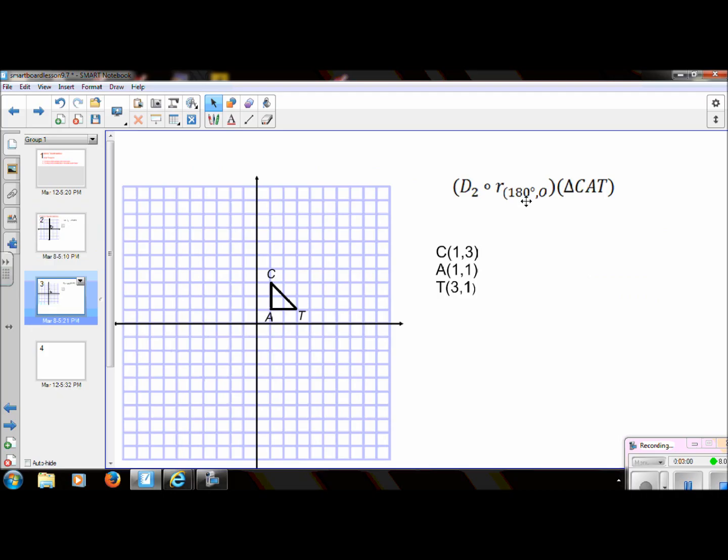So in this one, the transformation I'm going to apply is I'm going to do a rotation of 180 degrees, and then a dilation of 2. So I have graphed this triangle, C-A-T.